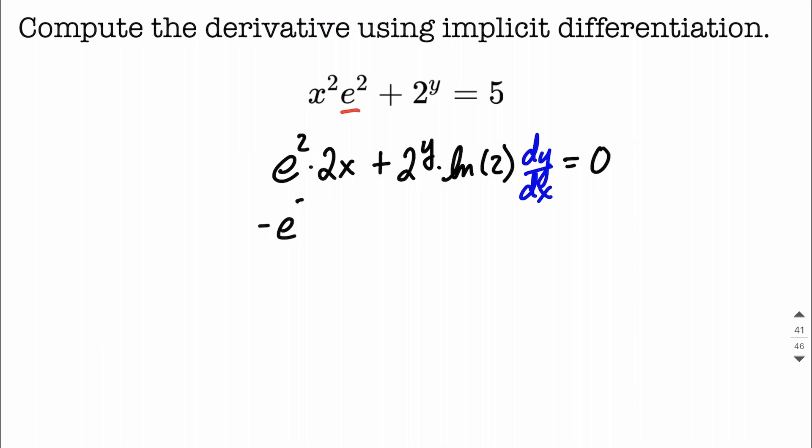So we're going to go ahead and move this term, the e squared times 2x. Let's move it to the other side. e squared times 2x moves over.